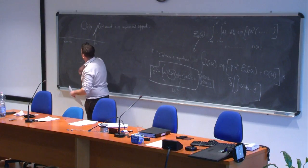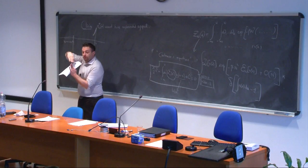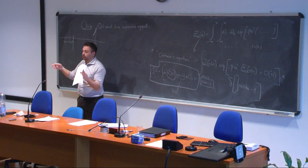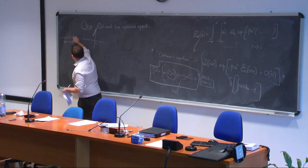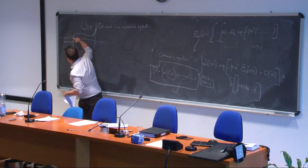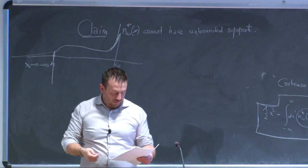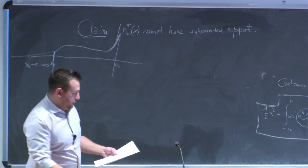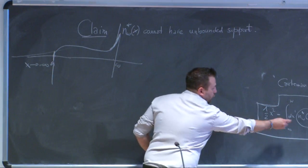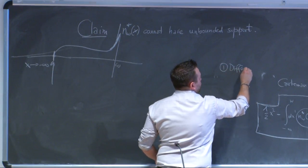So if the density has unbounded support, the integral equation cannot be satisfied. We expect a cutoff: the density should have a lower edge, much like the semicircle has a lower edge. The idea to solve this equation is first to differentiate it with respect to x.